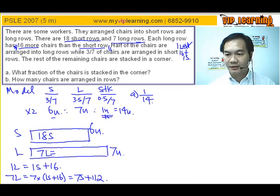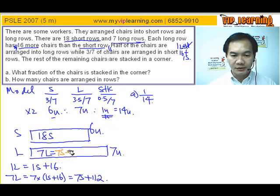That means at this point we have 7 short rows plus 112 chairs.